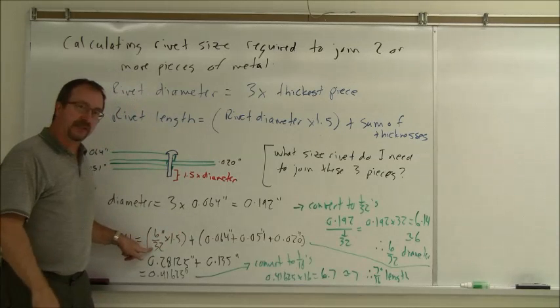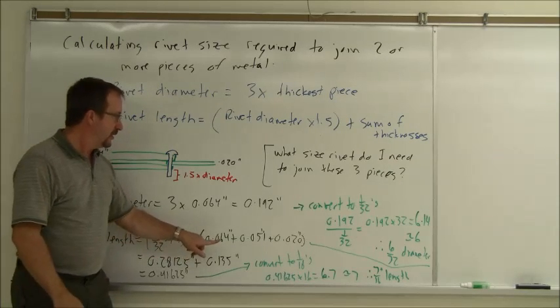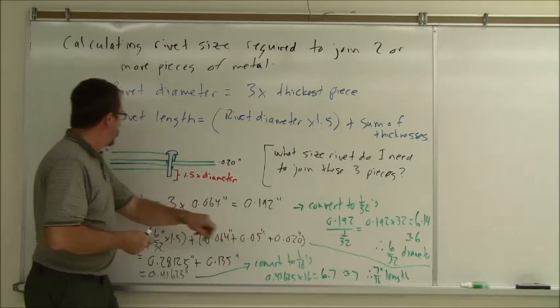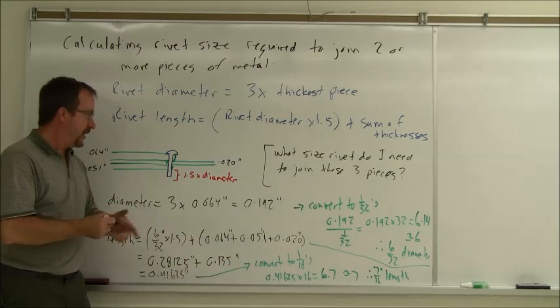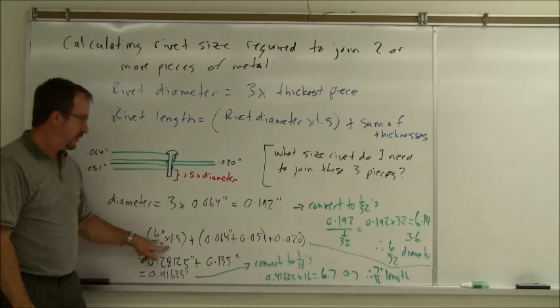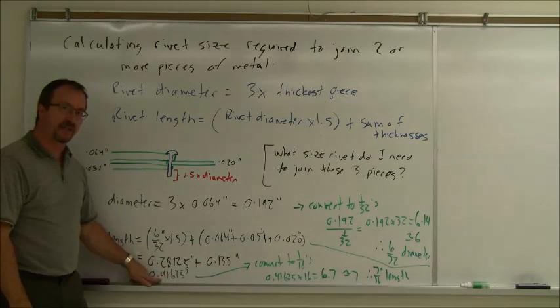I determined I had a 6/32 diameter rivet, times 1.5, plus the 0.064 piece, the 0.051 piece, plus the 0.020 piece. Add all of that up, you get 0.28125, plus 0.135, gives it 0.41625 inches.